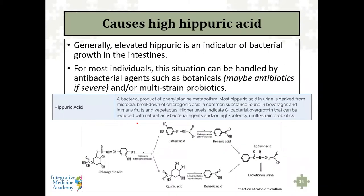Causes of high hippuric: generally elevated hippuric is an indicator of bacterial growth in the intestines. For most individuals, this situation can be handled simply with some probiotics — nothing more than that. We could always use some antibacterial botanicals, but that would have to be defined by the clinical presentation. The vast majority of people would do fine with either multi-strain probiotics or maybe the addition of a botanical.